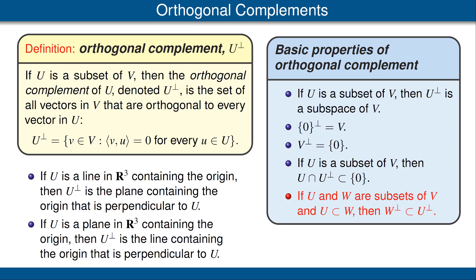Finally, if U and W are subsets of V and U is a subset of W, then the orthogonal complement of W is contained in the orthogonal complement of U. In other words, the inclusions get reversed. Again, this is easy to verify from the definitions. You should pause the video for a moment, verify these, or check the verifications in the book.